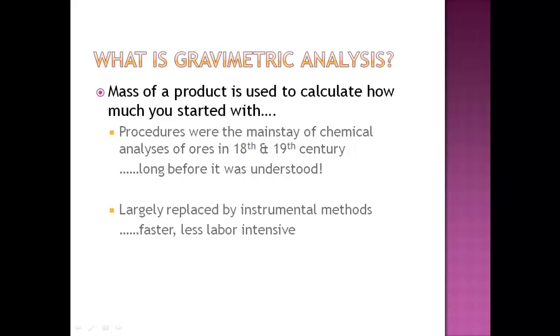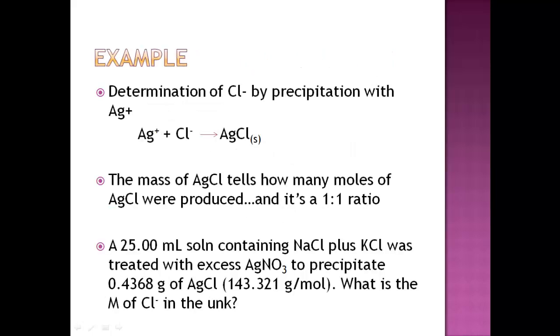A really simple example that shows gravimetric analysis is the determination of chlorine, the chloride ion, by the precipitation of the silver ion. So here I'm showing you a net ionic equation which shows you that one mole of silver ion plus one mole of chloride ion precipitates out a silver chloride solid compound. The mass of the AgCl tells you how many moles of AgCl were actually produced. And if you notice, it's a one-to-one ratio to everything there.